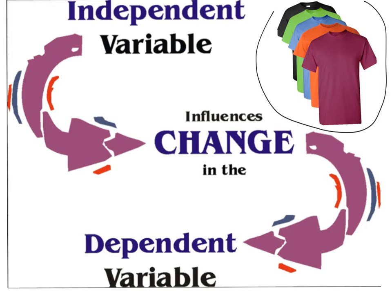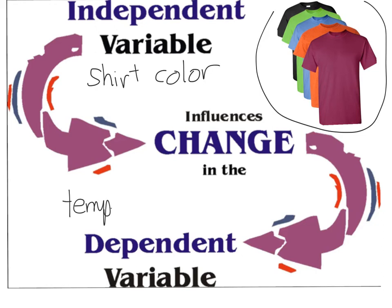I want to know what color t-shirt will make me stay coolest on a hot sunny day. In that case, it's the shirt color that is my independent variable. Notice I didn't just say color — I said shirt color, because you always want to know: color of what, time of what, temperature of what. And the color of my shirt I'm predicting will change how hot I feel — which has a better name: temperature is probably a more scientific sounding name for that variable.